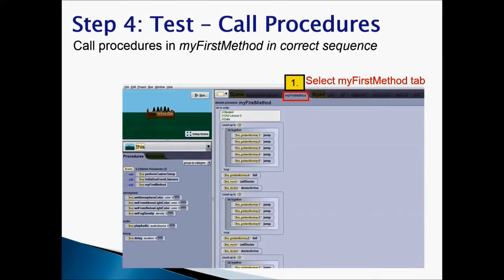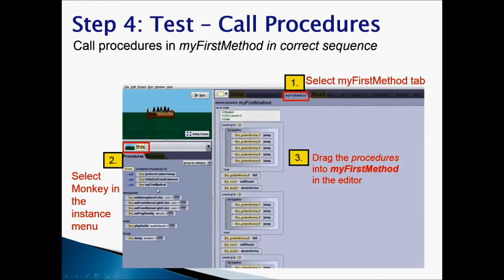So now the first step you want to do is click on my first method. The second step is click on the monkey in the instance menu. Now there are 5 monkeys and all 5 monkeys will know how to jump because you created the procedure. So you have to click on that monkey and you will see the jump procedure. Then you will drag the procedure into my first method in your editor area.